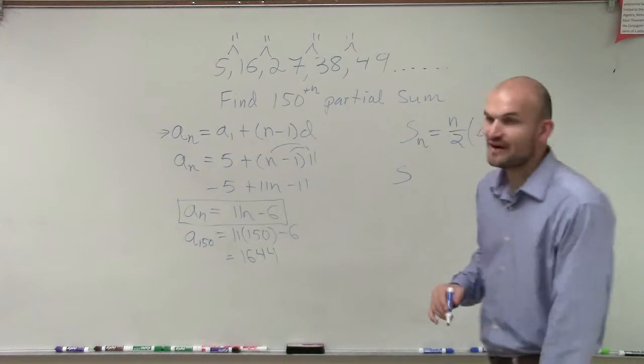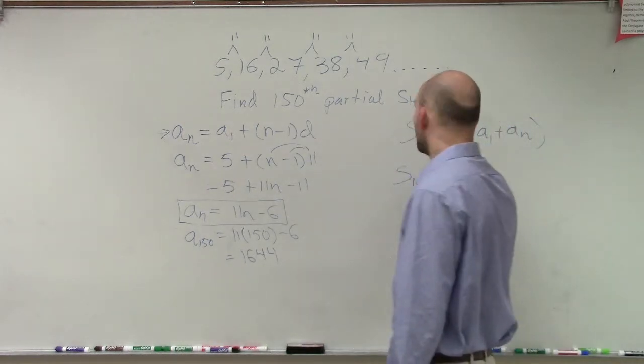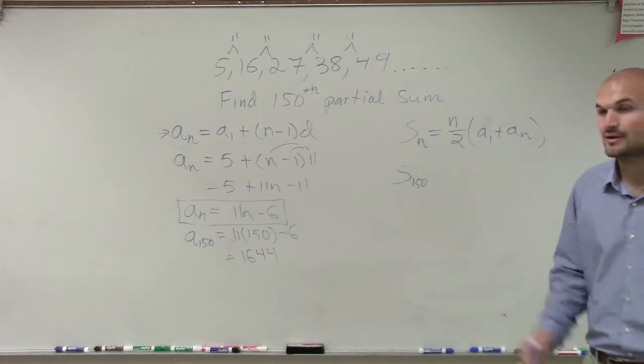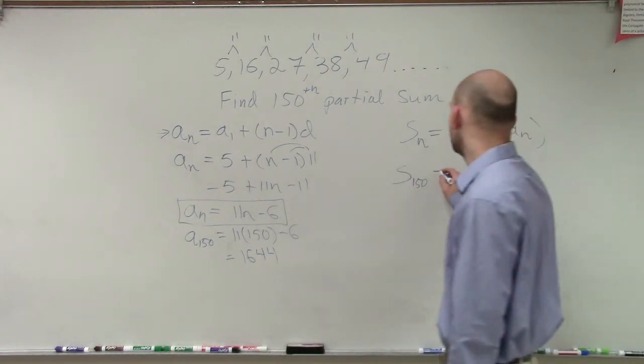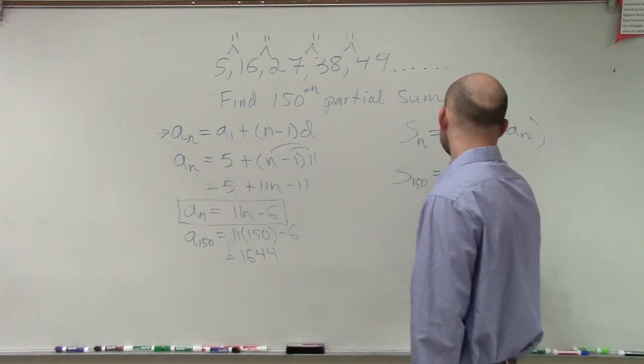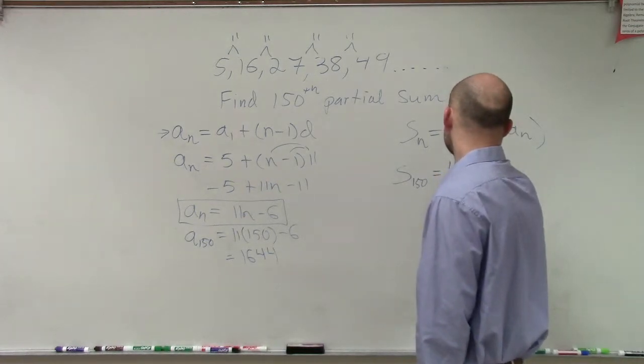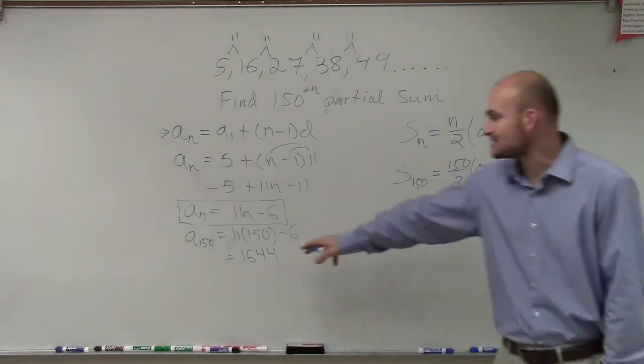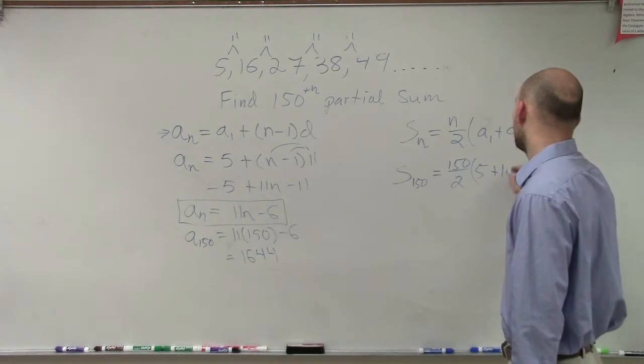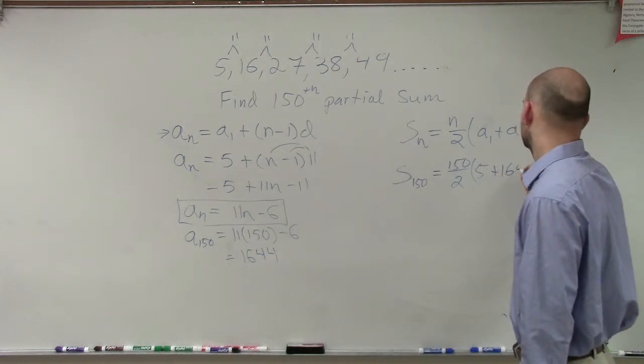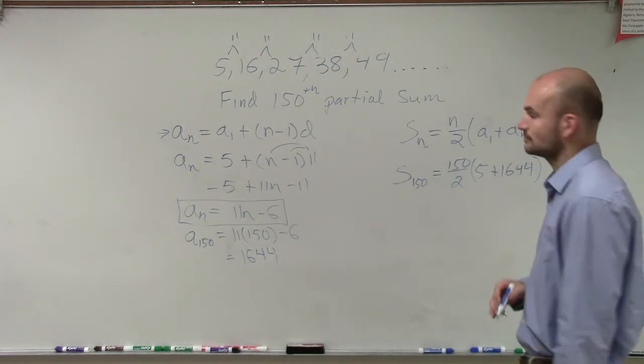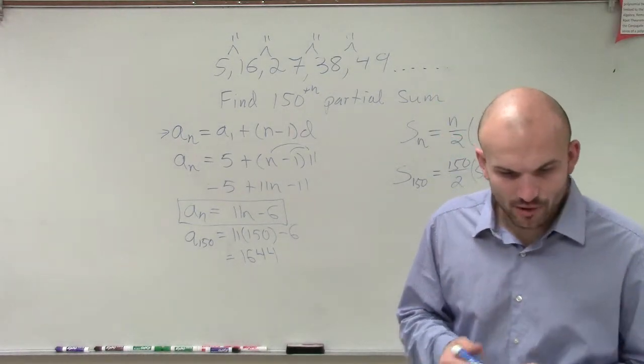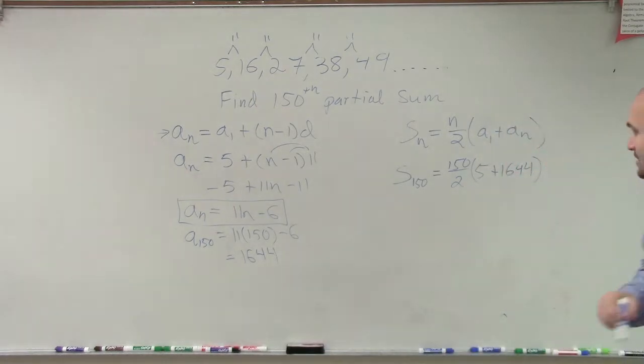So, now what they're asking me to do is find the sum of 150 terms. That means I'm adding all of these terms. Well, I can't just keep on adding them, ladies and gentlemen, but what I can do is say, well, there's 150 terms divided by 2. And now I know the first term is 5, and I now know the last term is 1,644. Okay. So, you do your math, you carry your 1, and you get 123,675.